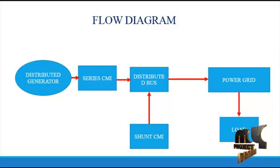After the series CMI, the shunt CMI is connected in series with the distributed buses. The output of the distributed buses is fed to the power grid. And after, the output of the power grid is delivered to the consumers.